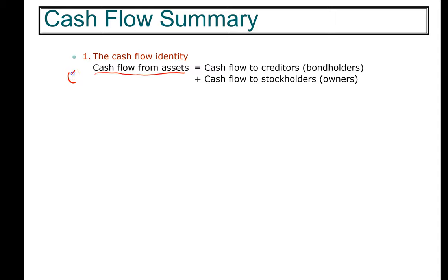Cash flow from assets is the ultimate goal. You can think of it similar to the balance sheet identity — this is the cash flow identity for the entire firm. There are two recipients of those cash flows: the first is cash flow to creditors, which includes bondholders, the bank, and anybody that the company owes money to. The second is cash flow to stockholders. All cash flow generated from the assets of the firm will be distributed either to creditors or to stockholders. This is the first cash flow identity.